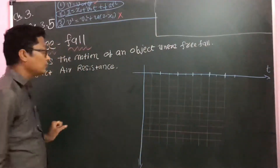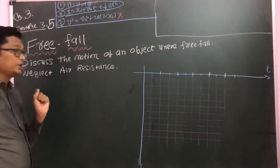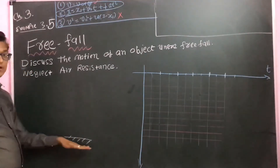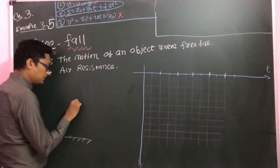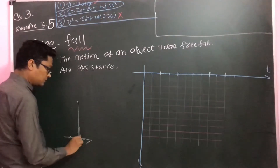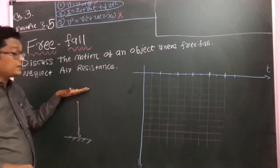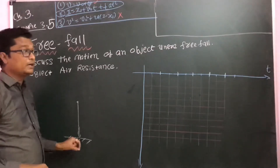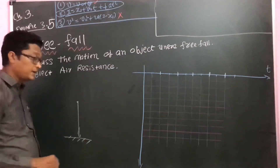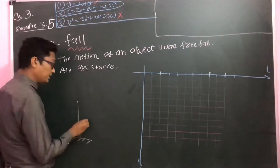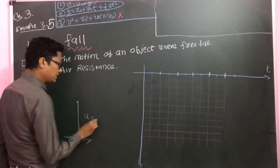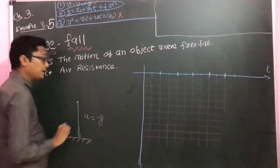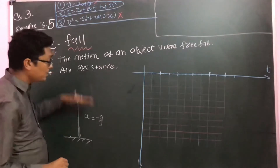First of all let us try to understand the meaning of free fall. Consider this is the surface of the earth and we have an object which is falling down — it is a downward journey. The force acting on it is gravitational force, and if we find its acceleration then it is due to gravity.